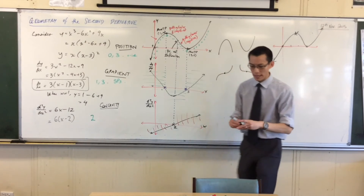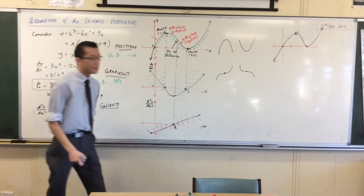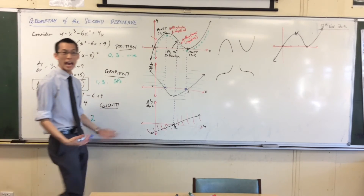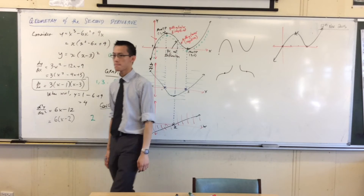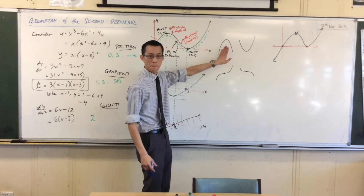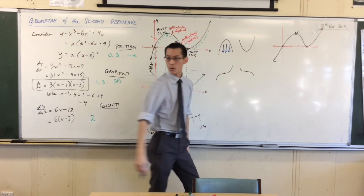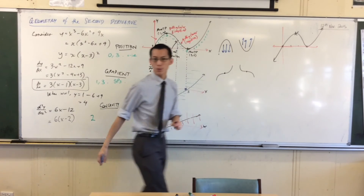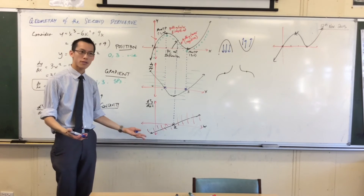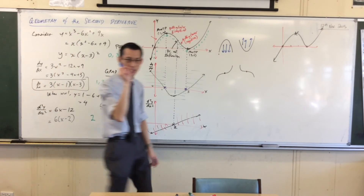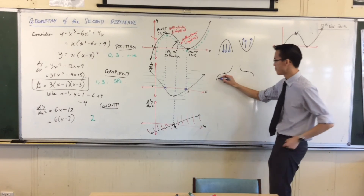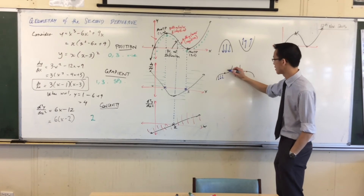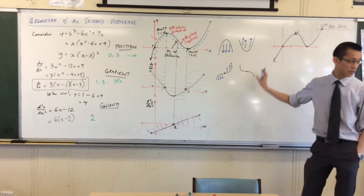Now it does mean something. Have a look at how these things change. The two stationary points: tell me about the concavity of these stationary points. My maximum is concave down — all the way through it's concave down. My minimum is concave up all the way through. But these two guys down here are also stationary points, but the concavity has changed — on the left hand side concave down, then as you transition past that horizontal point of inflection, it's concave up.